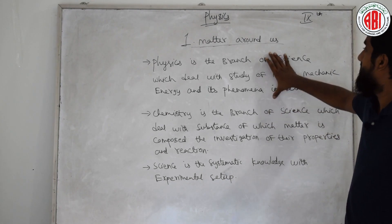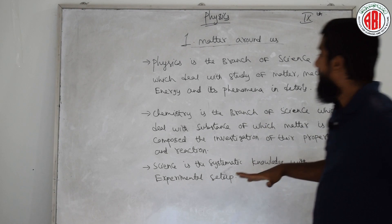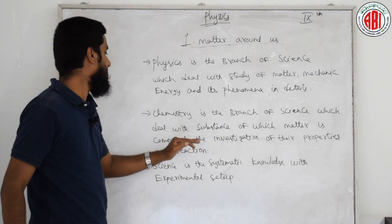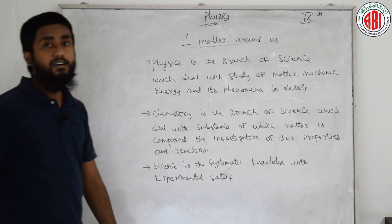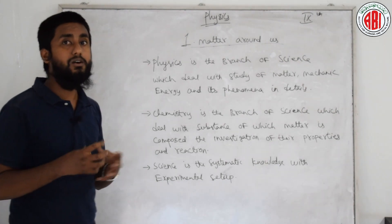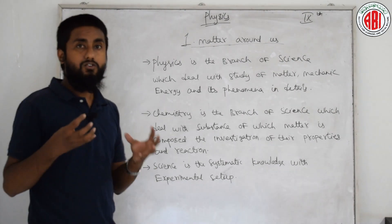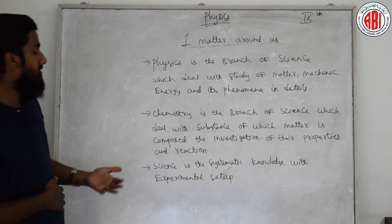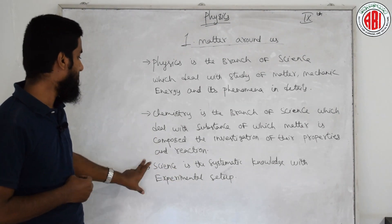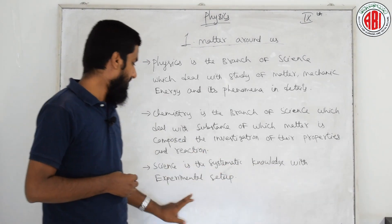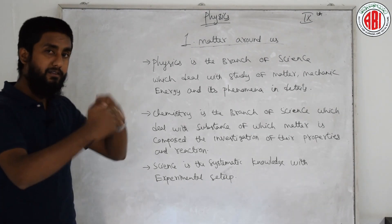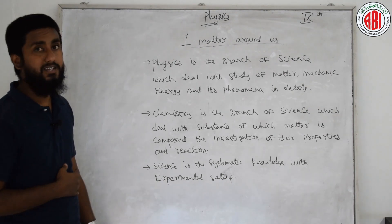So this is the definition of physics. Now coming to the definition of chemistry. Chemistry is a branch of science which deals with the substance of which matter is composed, the investigation of their properties and reactions. Chemistry is a study of material substances, how they are composed, and it investigates their properties and reactions.